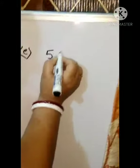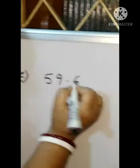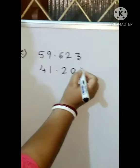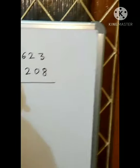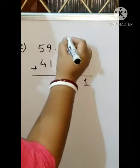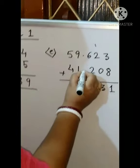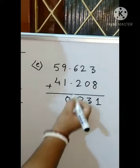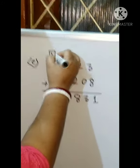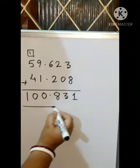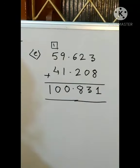Now question number C. That is 59.623 and it is added by 41.208. So we will add: 3 plus 8 is 11, 1 carry. 2 plus 1 is 3, and then 6 plus 2 is 8. The decimal point will come down. And then 9 plus 1 is 10, 0, 1 carry. 5 plus 4, now 5 plus 4 is 9 and 1 is 10. So the answer is 100.831. I hope you have understood now children. So in this way you will complete question number 1.